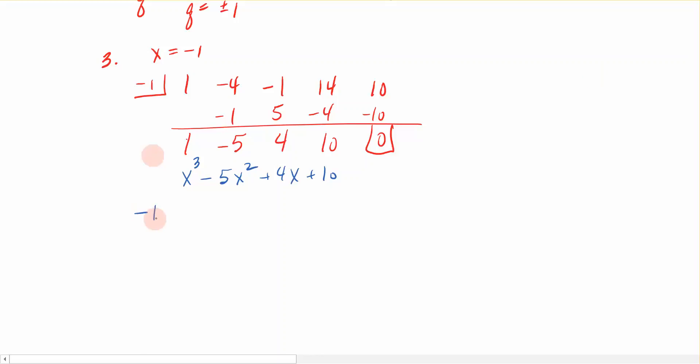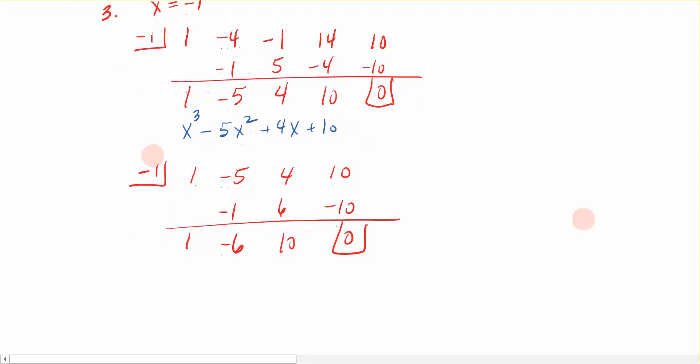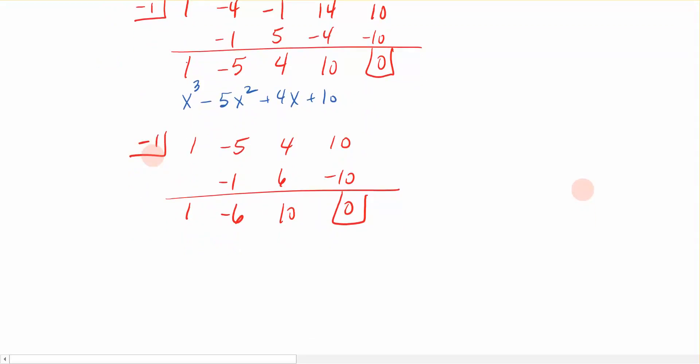So we're going to say negative 1 and again I'm using negative 1 because I know it's a repeated root. And I am going to perform synthetic division then on the coefficients of this 3rd degree polynomial, which was 1, negative 5, 4, and 10. So we bring the 1 down and we multiply. I get negative 6. So I multiply that, I get 6, I get 10, negative 10, and 0. Again I get a remainder of 0, so I know that this was a factor of this polynomial again.